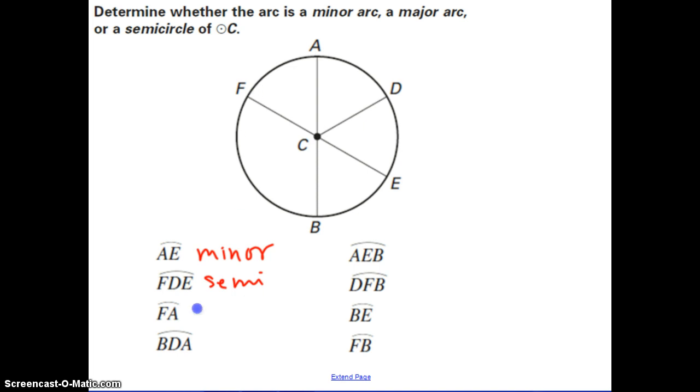FA is going to be a minor arc, and BDA, B to D to A. Again, those are ends of a diameter, so this is half, and it's a semicircle.